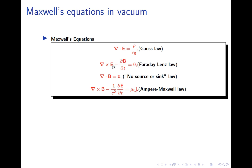A comment on counting equations: the divergence equations are scalar equations (one component each), while the curl equations are vector equations (three components each), giving eight equations total. We have six variables: three components of E and three of B. There's an apparent mismatch — eight equations but six unknowns. The resolution is that the three components of a curl are not independent; the third component can be derived from the first two.